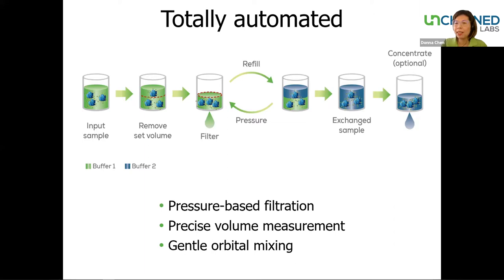At the end of the buffer exchange process, Big Tuna can also concentrate the sample down to your target working concentration range, or it can bypass buffer exchange and go directly to concentration. Throughout the entire buffer exchange process, gentle orbital mixing is occurring simultaneously. This helps fast-track buffer exchange by constantly stirring particles to prevent concentration gradients from building up near the membrane surface, mitigating the risk of clogging the membrane.